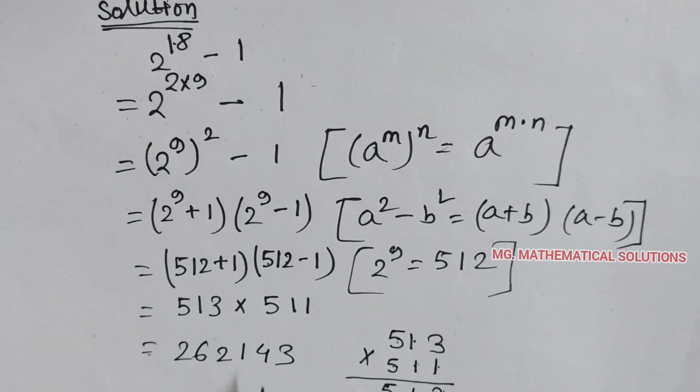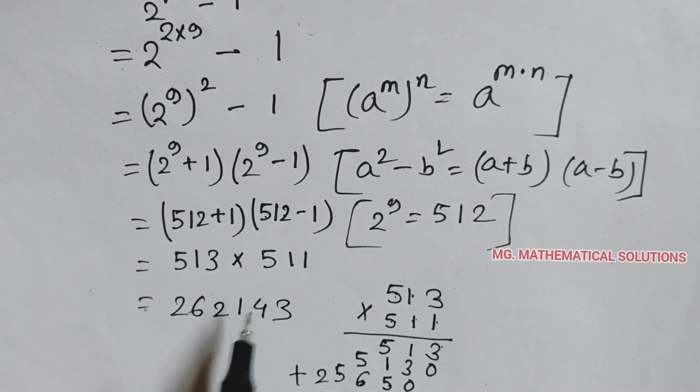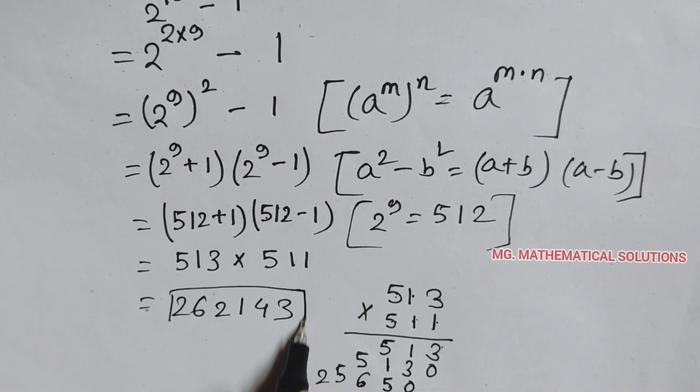So 2 to the power 18 minus 1 equal to 262,143. This is the final answer.